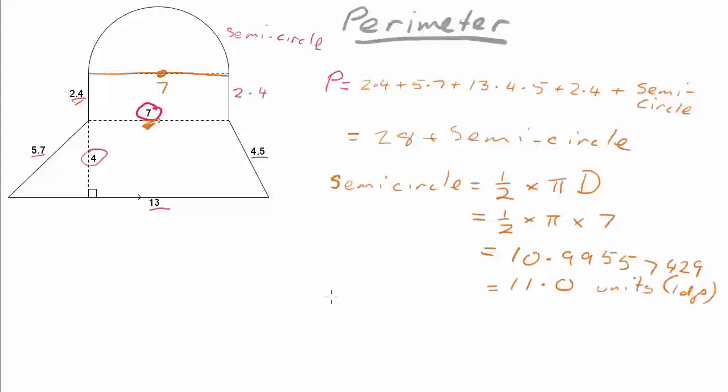Which now we can calculate the entire perimeter by taking the twenty eight that we calculated earlier, adding the eleven point zero, which will give us a final perimeter of thirty nine point zero units.